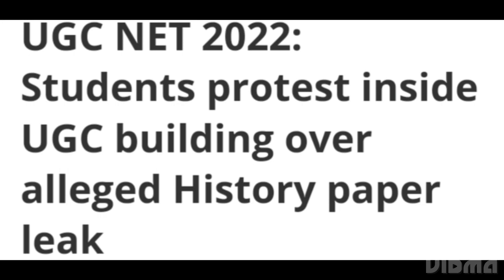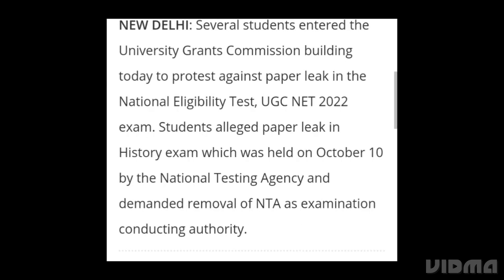UGC NET 2022 students protest inside the UGC building over alleged history paper leak. Students entered the University Grants Commission building to protest against the paper leak in the National Eligibility Test. The history exam, held on October 10 by the National Testing Agency, was alleged to have been leaked. Students demanded the removal of the anti-examination conducting authority.